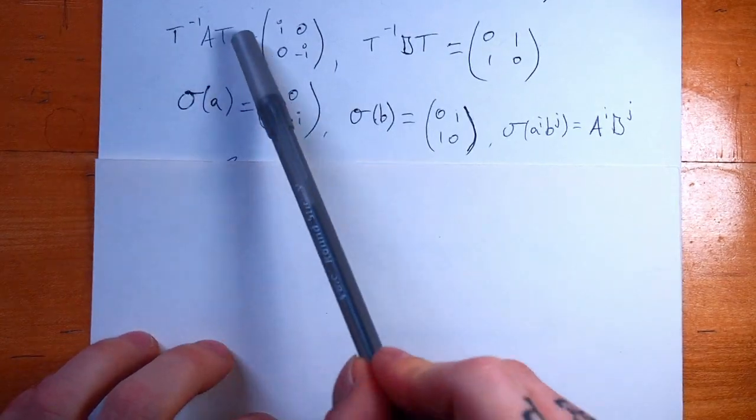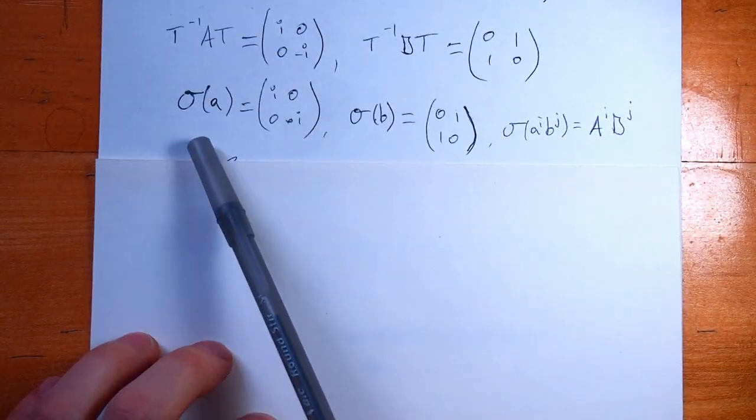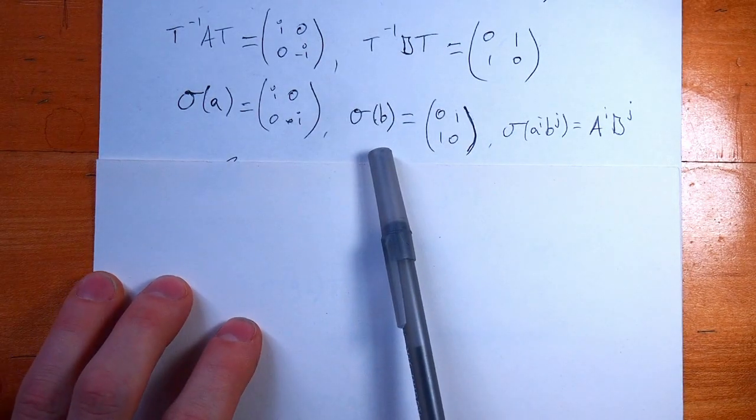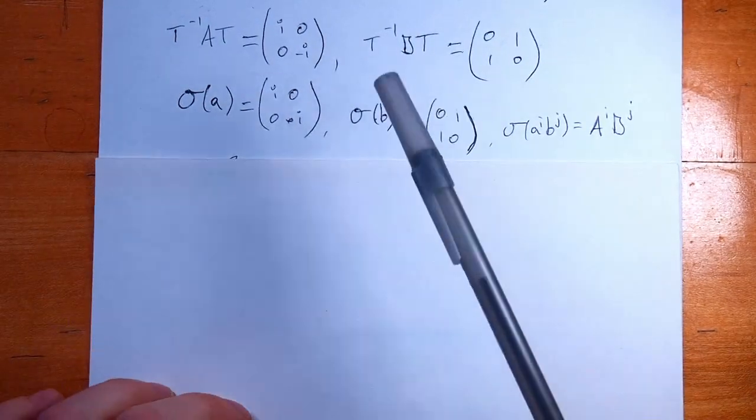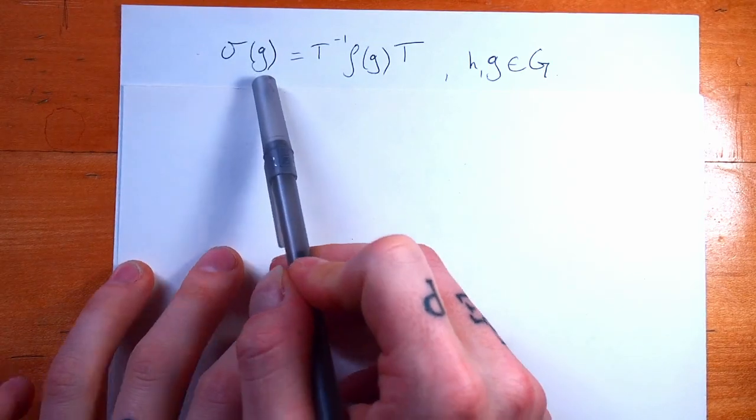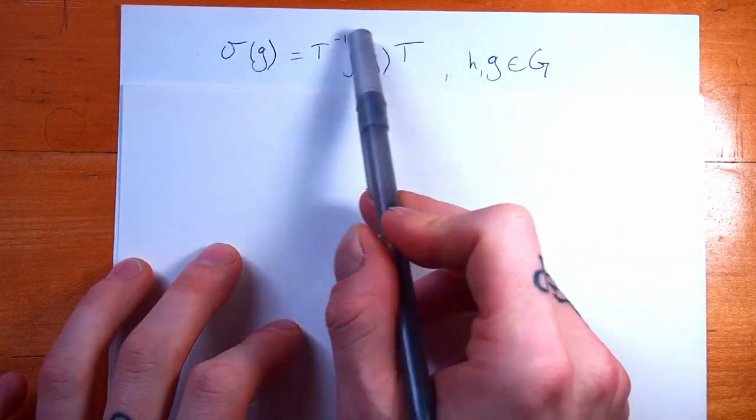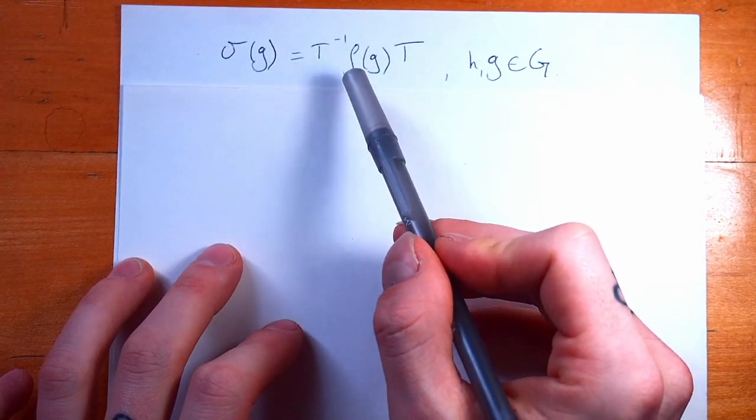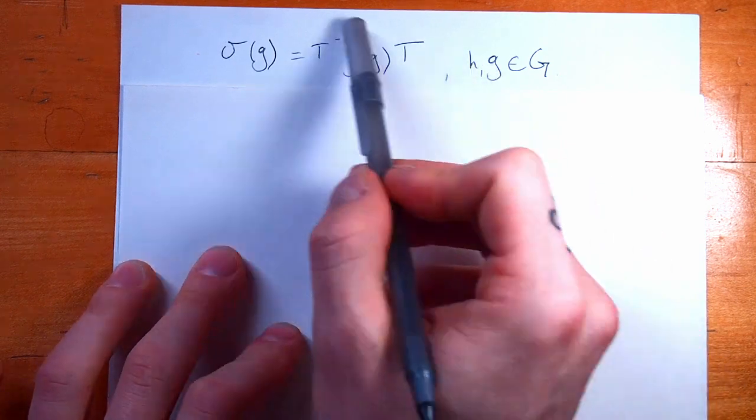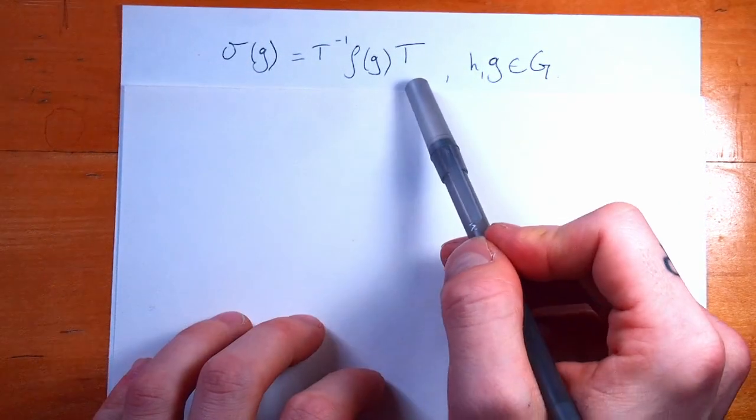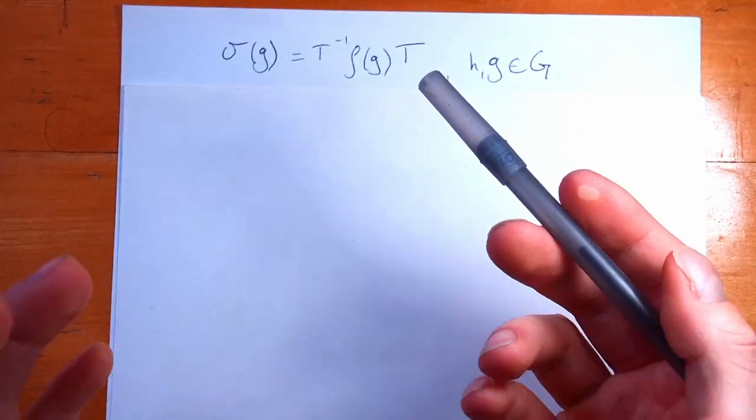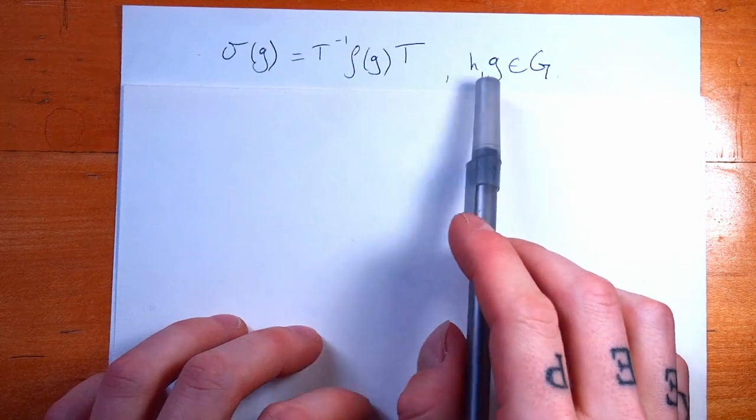Now, you might be worried that this construction doesn't actually give us that sigma is a homomorphism. So let's go and check that right now. It actually follows pretty simply. By our construction, we're saying that sigma of some element in our group is equal to the inverse of some T times our old representation, acting on a group element, times that particular invertible T. This is going to be a general proof, but it will work in the particular case of the example that we were just looking at too, because it's a general proof, of course. So I do need two elements in our group.